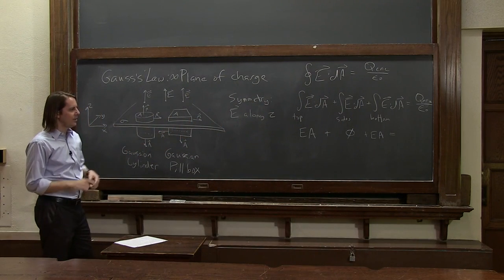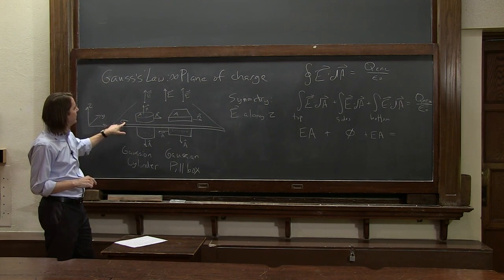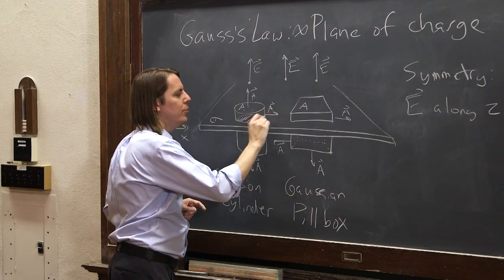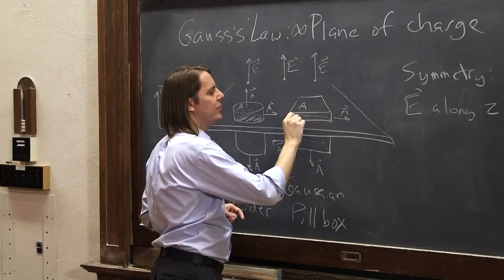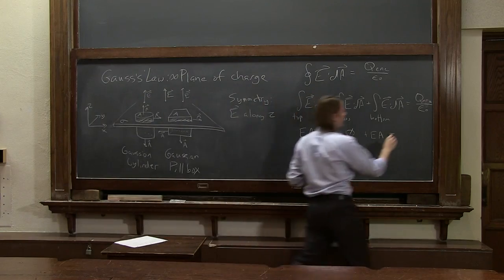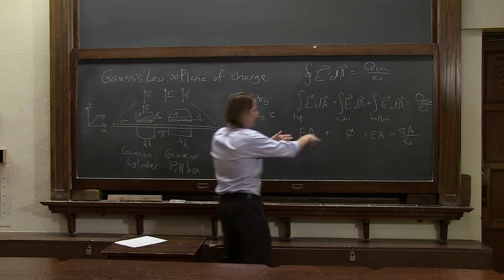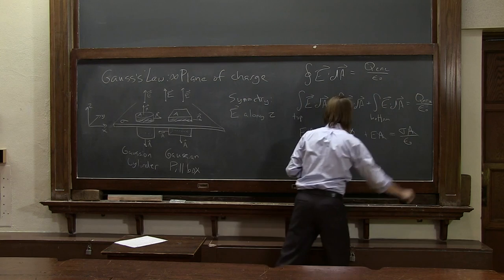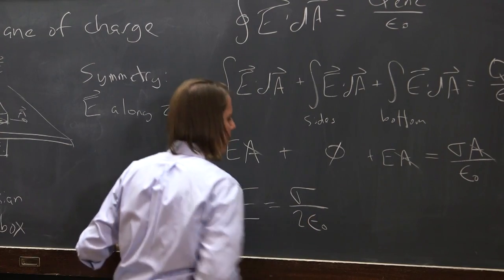So there's the integral side of the equation. The other side is the charge enclosed. The charge enclosed is that area times the charge density. Because the actual piece here that's enclosed looks like that. It's just, in this case, it's a circle with area A. In this case, I didn't leave myself a lot of room to draw it. But it's a square with area A. So it's just sigma times A over epsilon naught. So EA plus EA is 2EA. And the A's cancel.